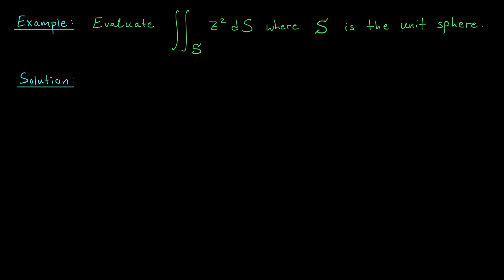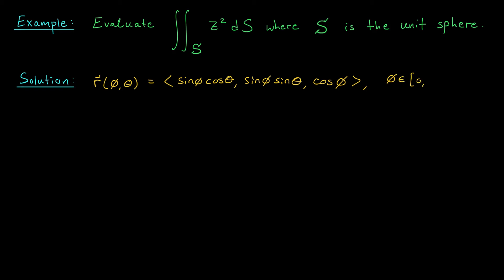Let's jump into an example. I'm going to compute my very first surface integral: the integral of z² over the surface S, the unit sphere. We need a parametrization for the surface. We can parametrize the unit sphere using spherical coordinates — the distance to the origin is constantly 1, so our parameters are φ and θ. We parametrize it as r(φ,θ) = (sin φ cos θ, sin φ sin θ, cos φ), where φ ranges from 0 to π and θ ranges from 0 to 2π.